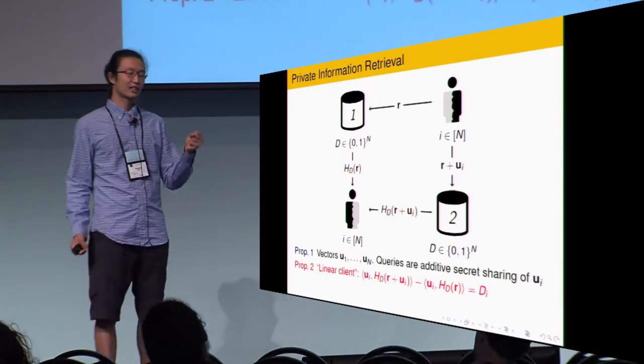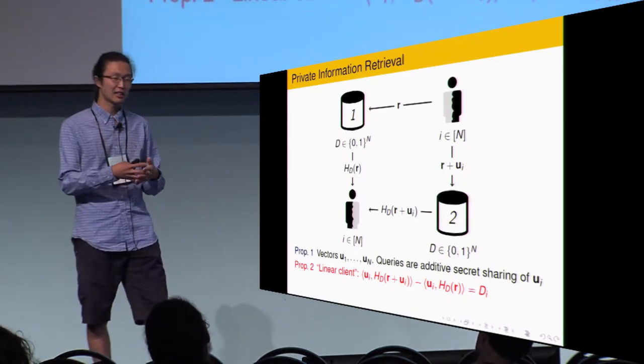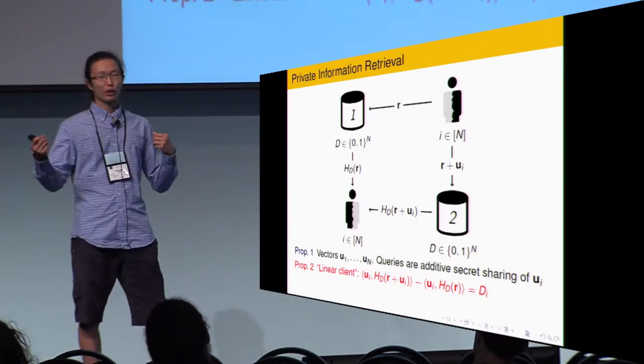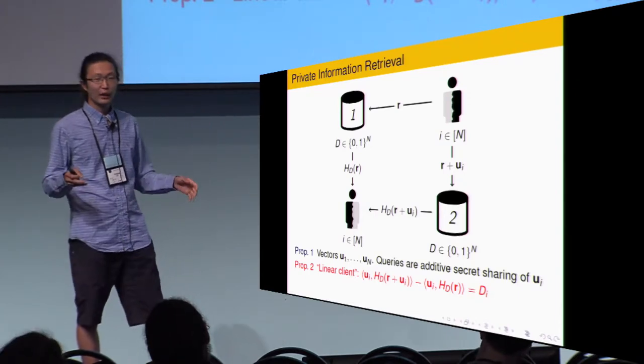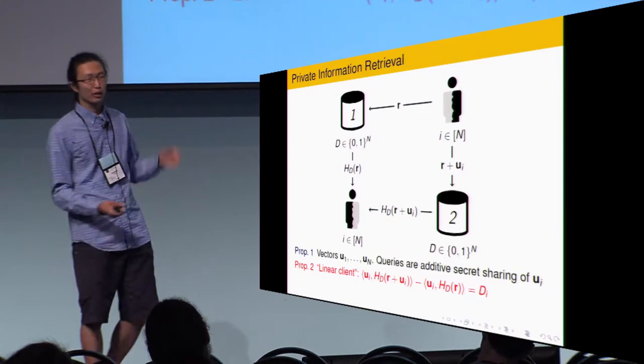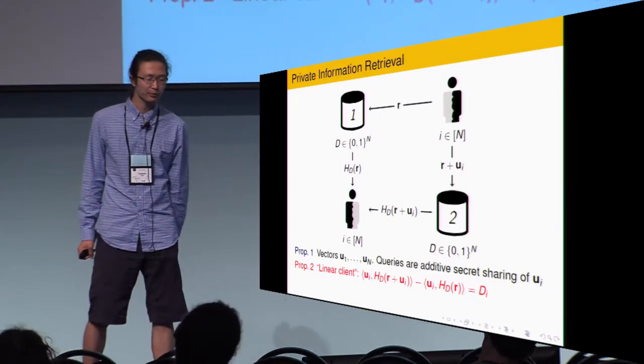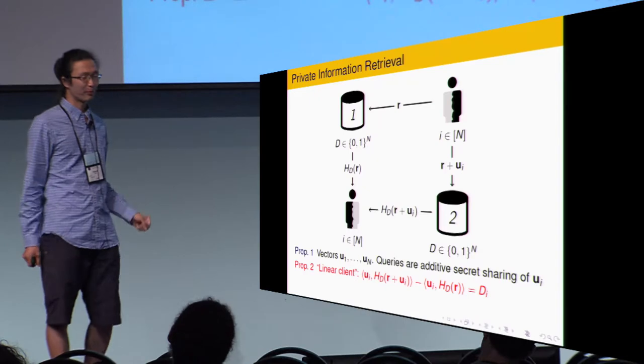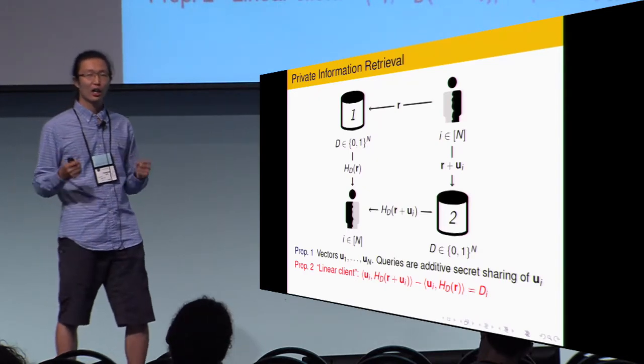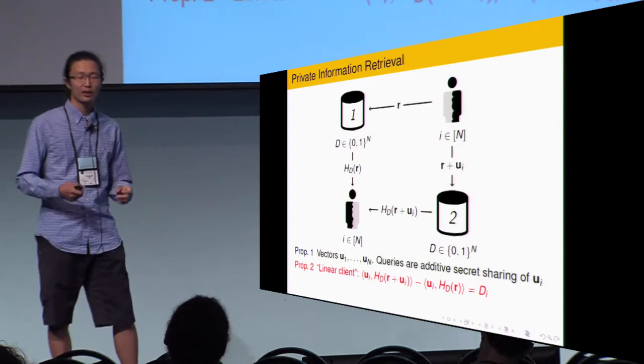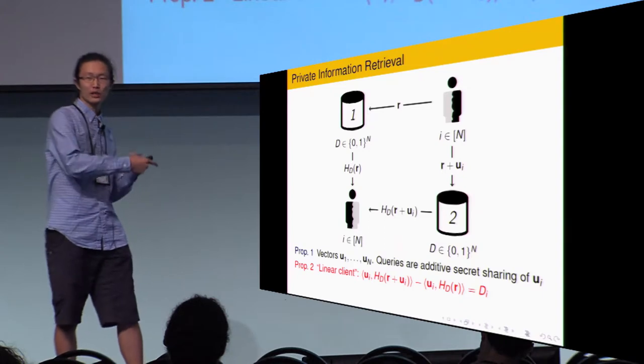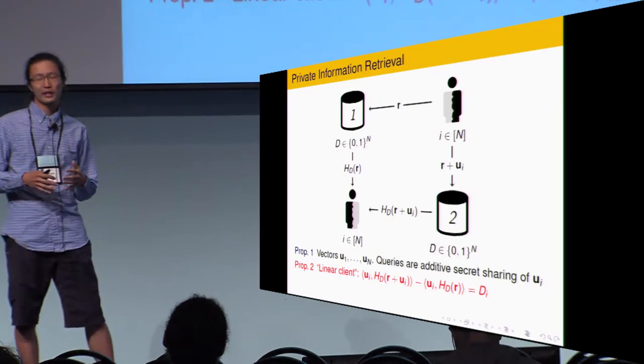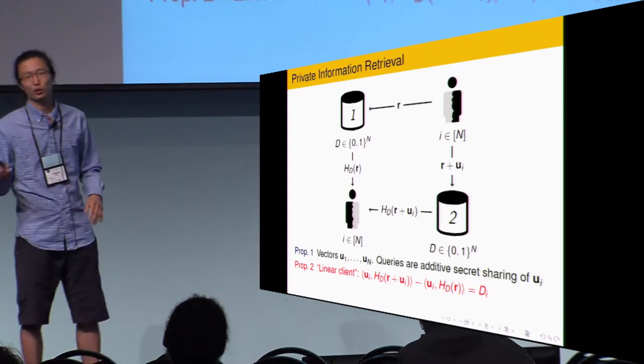The server answer the query, I don't know, I don't care how they do it, let H_D denote how the server answer the query. Our second assumption is like the client gets the S entry by doing some linear work. In particular, assuming you are the client, you get the answer, which is a vector on its own. You inner-product it with u_i. You subtract the two inner-products, the difference would be D_i. So, you may ask, oh, this looks quite specialized. But actually, it's not.